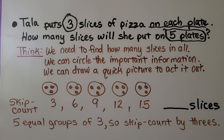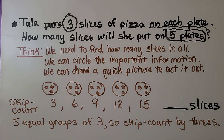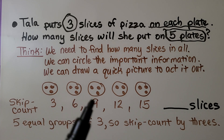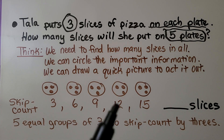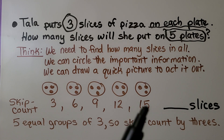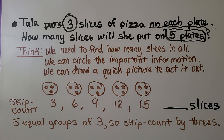We can skip count by threes. There are five equal groups of three, so we skip count: three, six, nine, twelve, fifteen. That means there will be 15 slices of pizza.